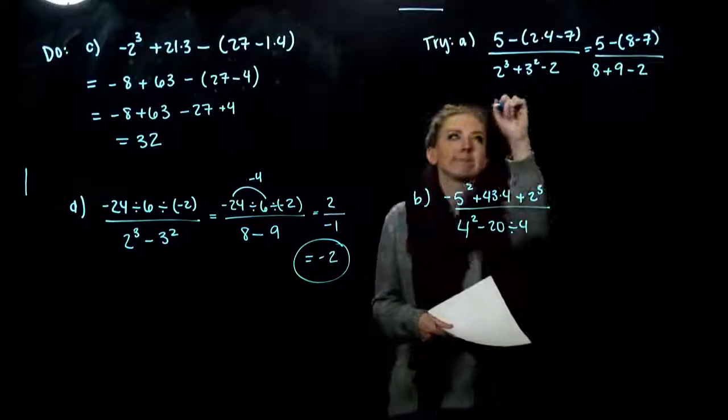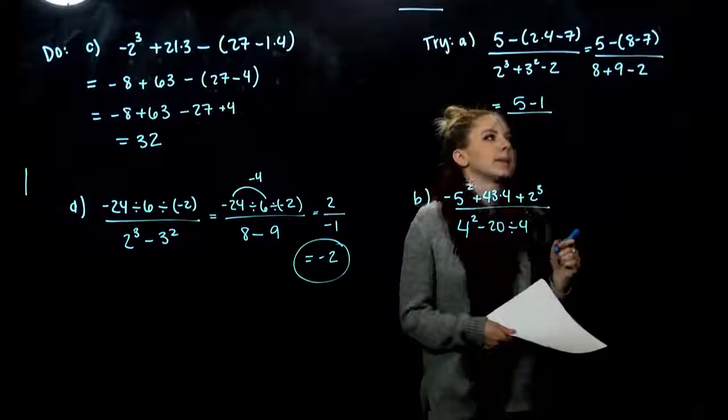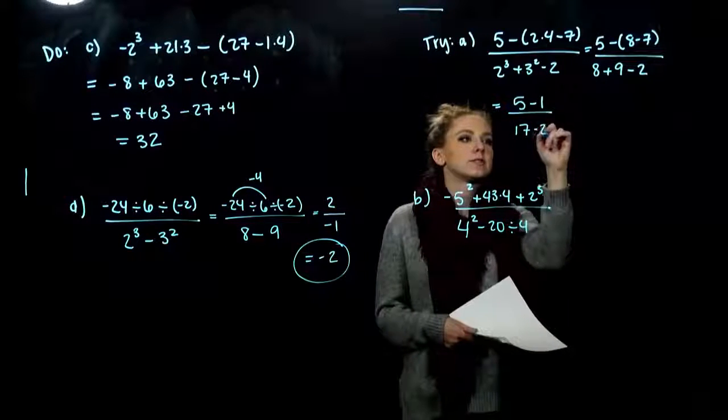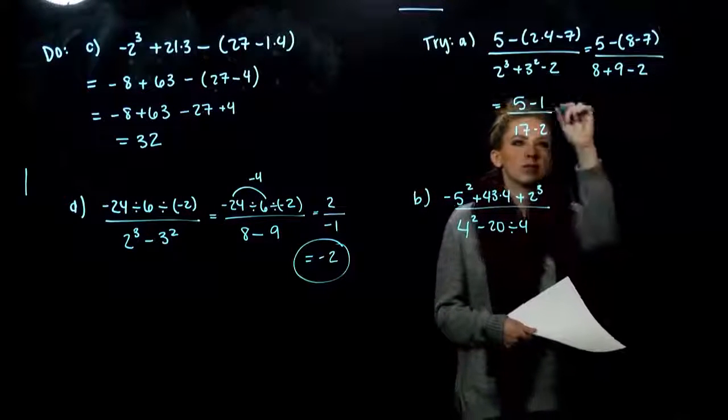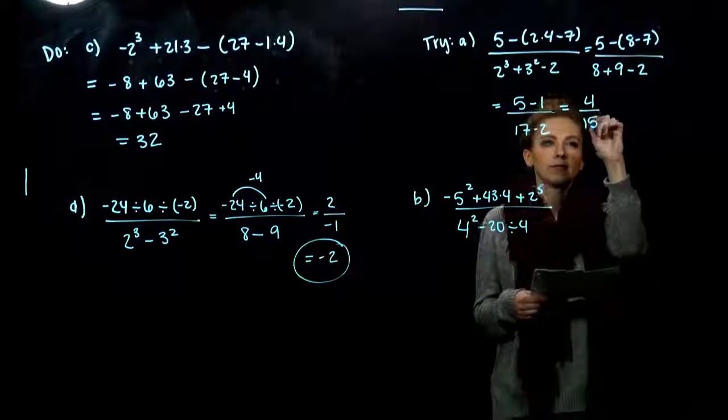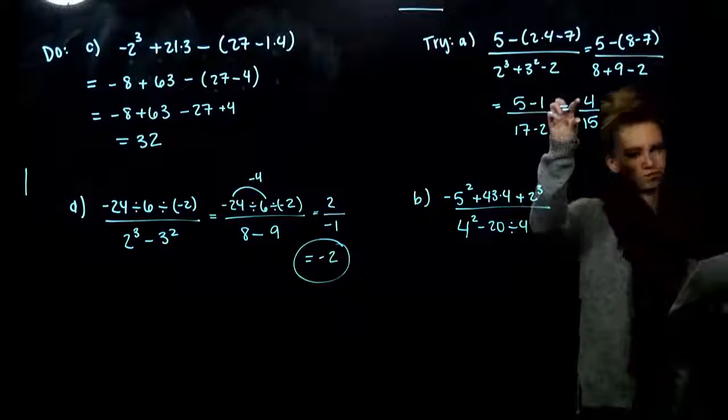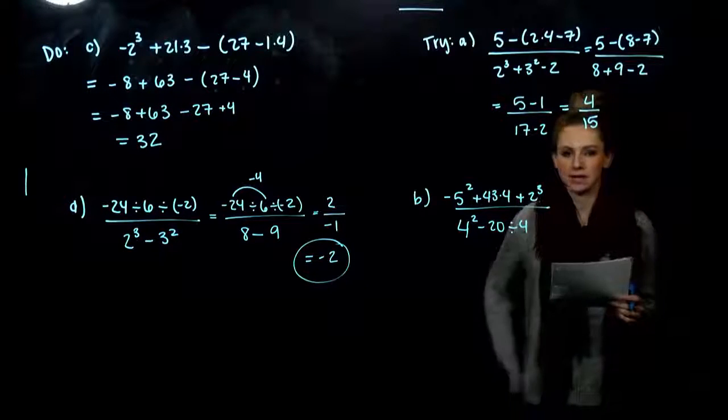So what are we looking at? 5 minus 1 up in the top. And I have 17 minus 2 if we're just working left or right in the denominator. So all together we have 4 fifteenths. And can we simplify any farther there? They don't have anything in common that I can take out of both.